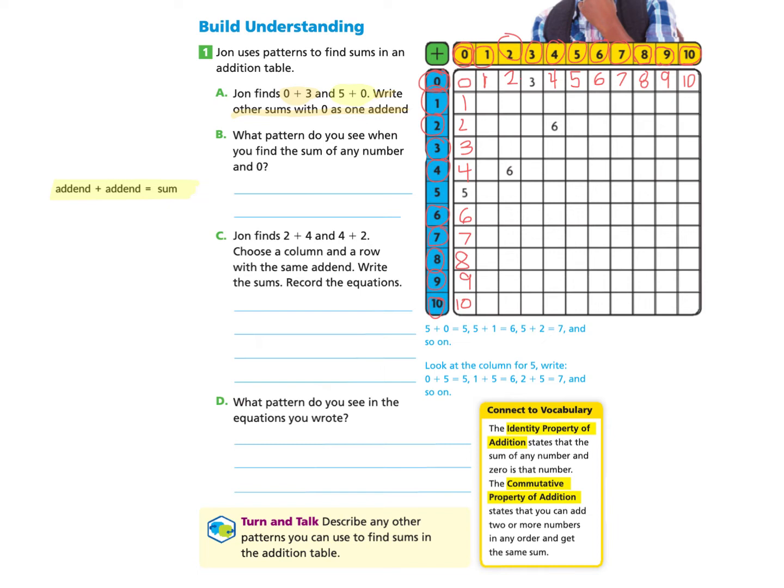Now let's take a look at part B. What pattern do you see when you find the sum of any number and 0? So this is really asking, what's that pattern that you're seeing? And we find that the sum is the same number as that number.